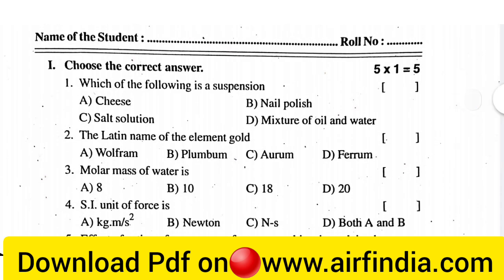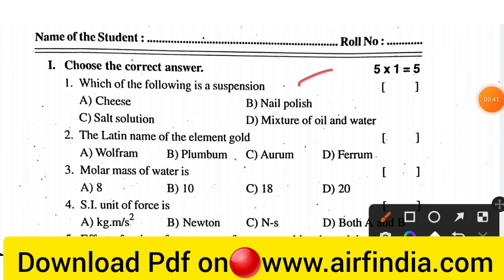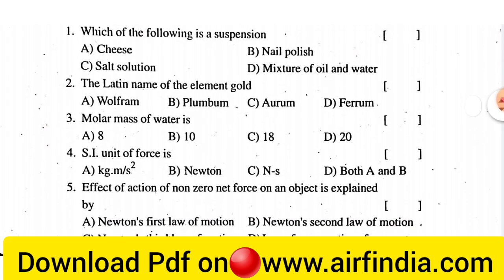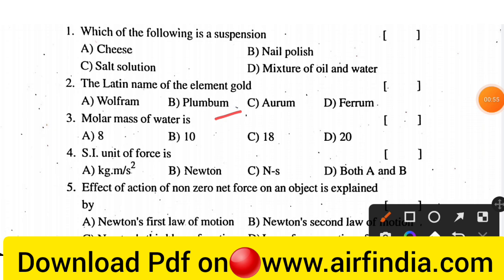The first question is: which of the following is a suspension? Options are provided. The second question is: what is the Latin name of the element gold? Options are given. The third question is: what is the molar mass of water? The options are 8, 10, 18, and 20.